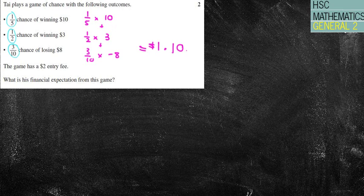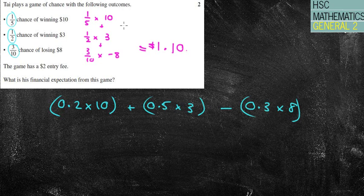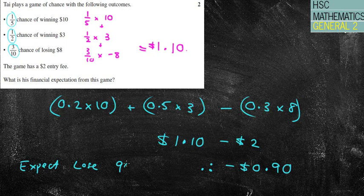A lot of people will say 1 fifth times 10 plus 1 half times 3, and then take away the 3 tenths times 8. That's exactly the same thing. Either way, we get a $1.10 return. So he's pretty happy. However, the game has a $2 entry fee. So we're taking $2 away. Therefore, what is the financial expectation? The expectation will be negative 0.90, which means we're going to expect to lose 90 cents if I play this game. Obviously, you could be lucky and you could win the $10, but certainly the expectation would be to lose 90 cents each time.